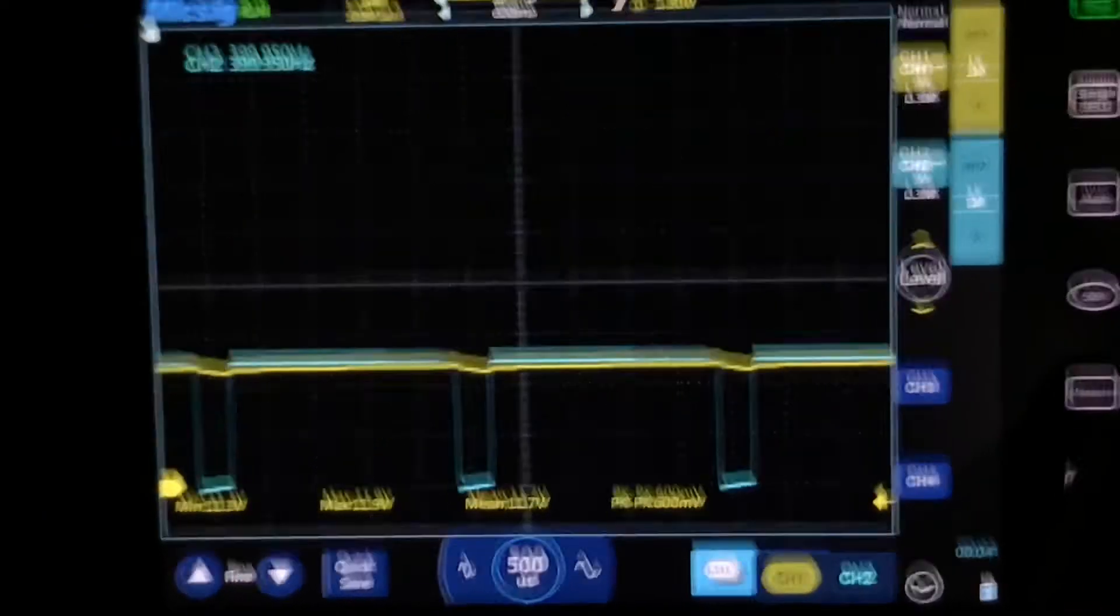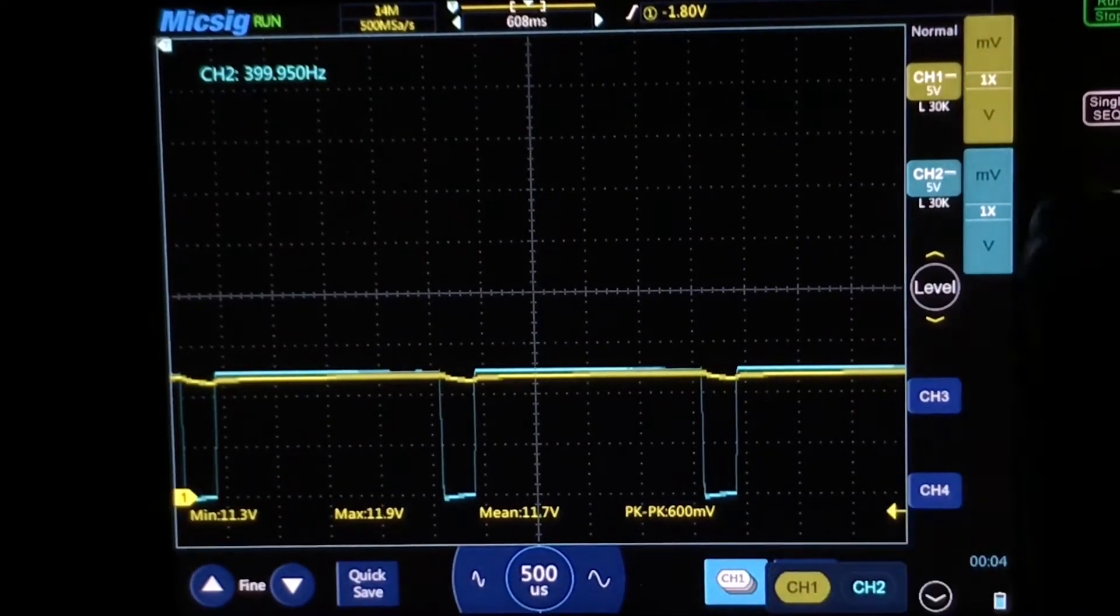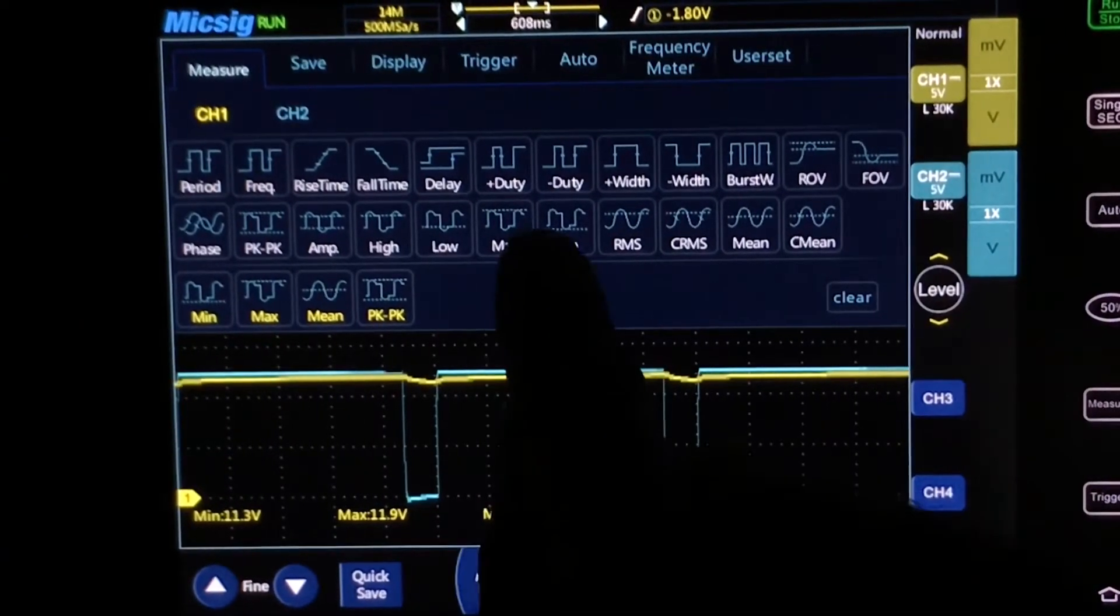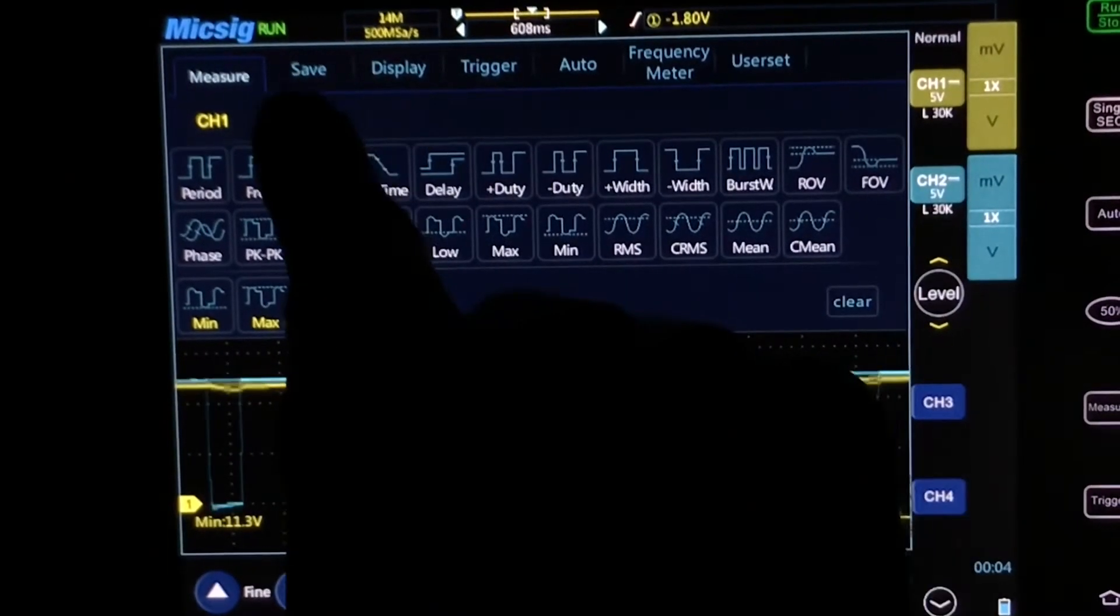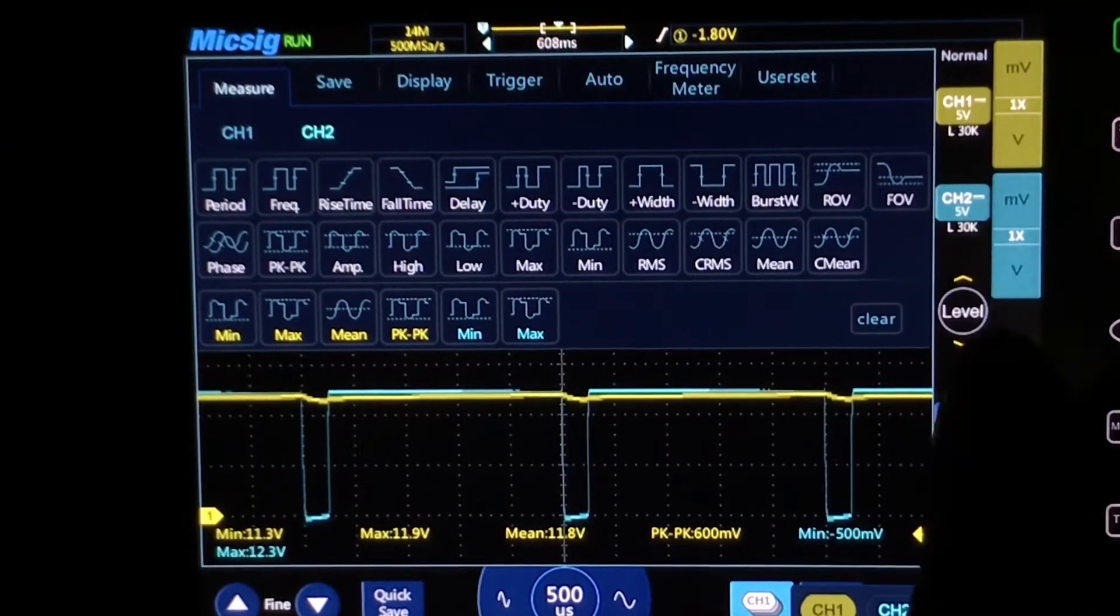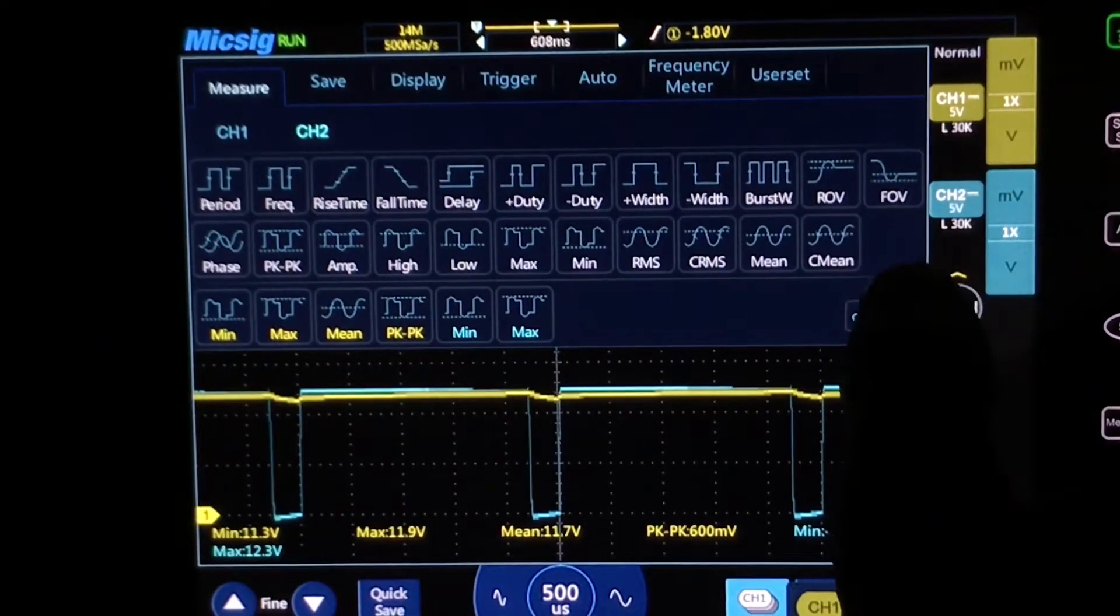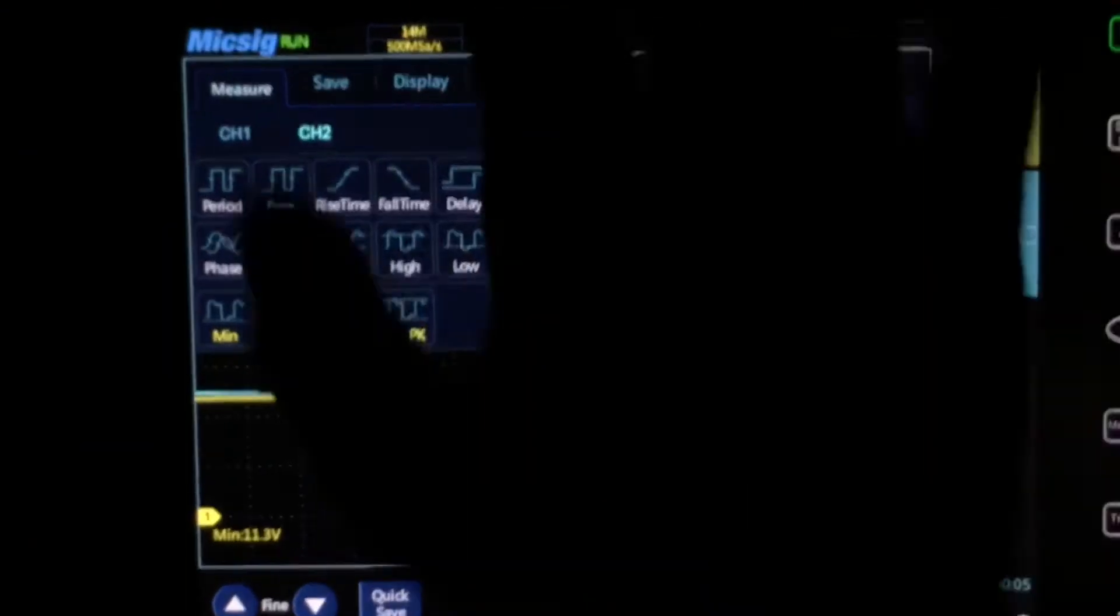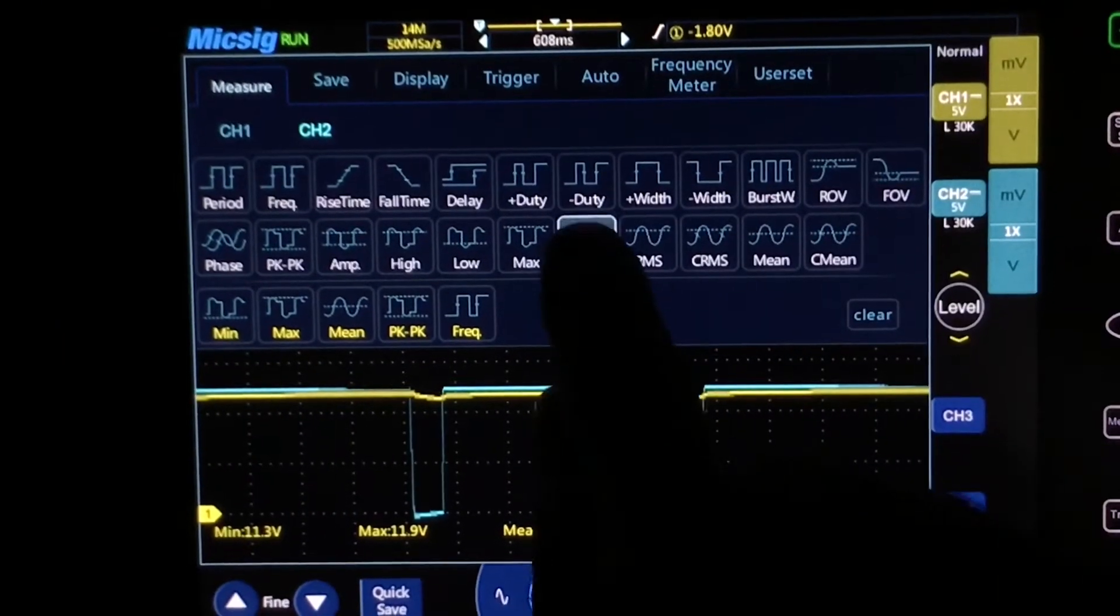This way it gives us a little better view of what's going on here, or it helps me anyway. We're going to go frequency meter, we'll put channel two. 309, 400 hertz. Quick measurement, channel two. Oh wait, wait, wait. Take those off. I'm going to go channel one real quick.